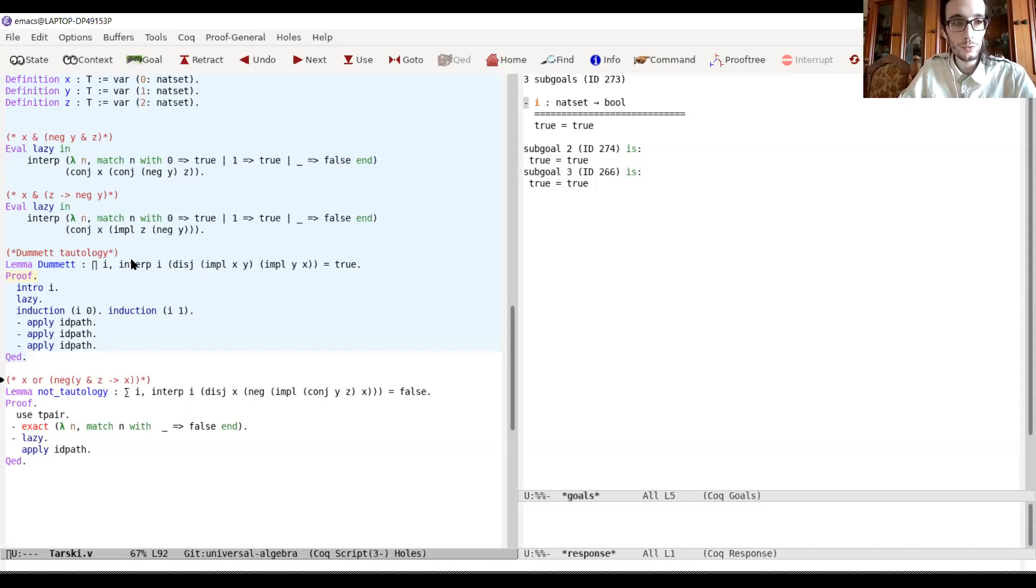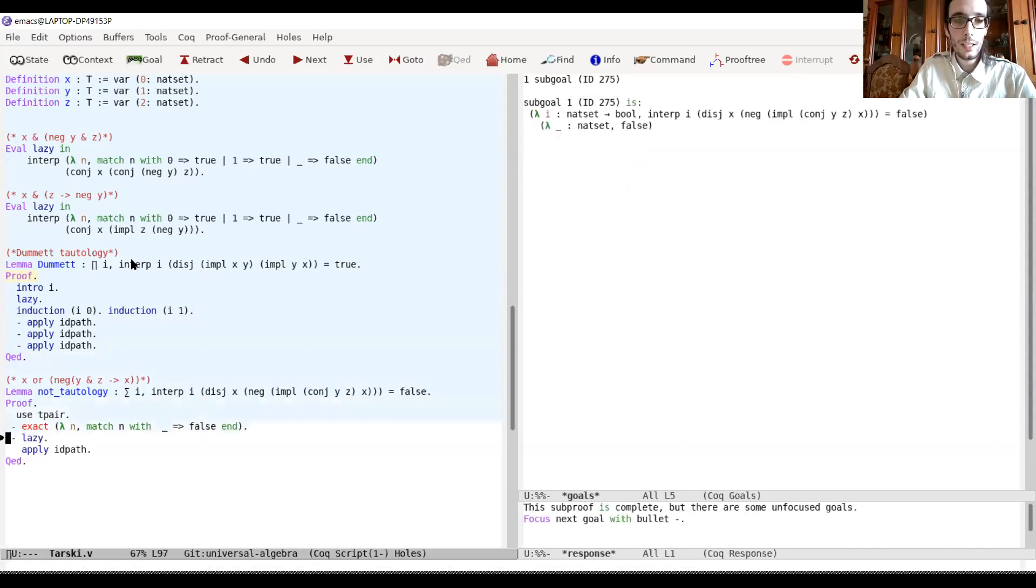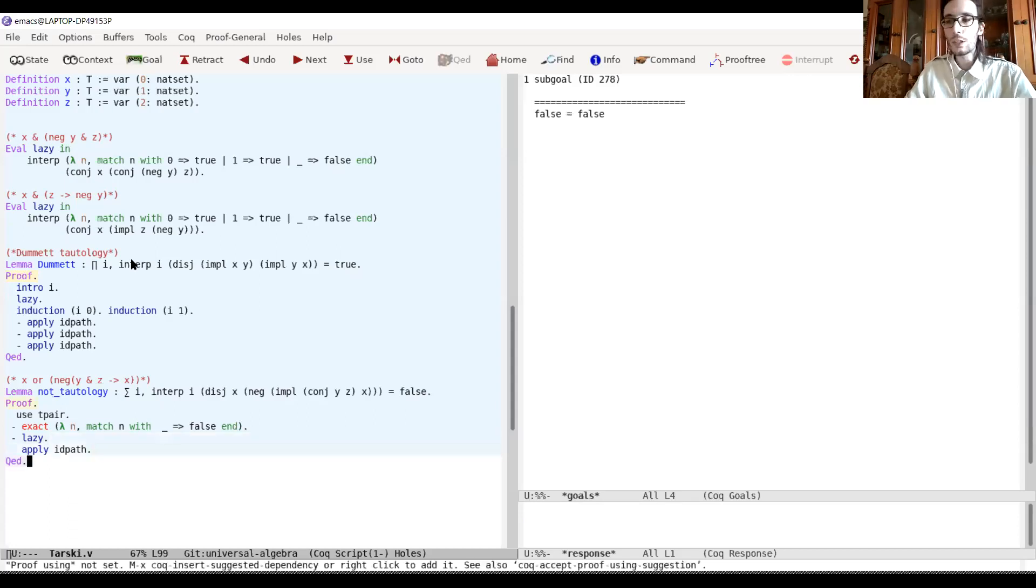So, the proof is extremely simplified. And similarly, we can prove that a formula is not a tautology. So, for instance, we can prove that x or not y and z implies x is false when x, y and z are all false. So, we just need to check that the valuation to false for any atom does the job. And here again, we apply a lazy evaluation on the goal. And again, there's nothing to prove. We just apply the path and we are done.